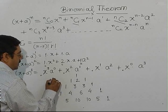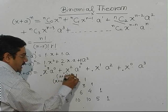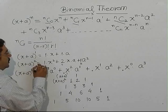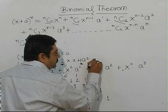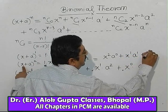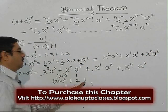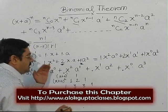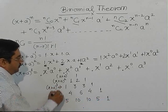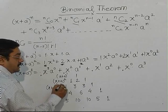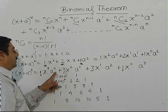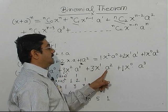So (x + a)^0 gives 1; (x + a)^1 gives 1, 1; (x + a)^2 has coefficients 1, 2, 1 — arrange highest power of x, lowest power of a, decrease x's power and increase a's power, putting coefficients 1, 2, 1. Similarly for (x + a)^3, arrange the powers, and the coefficients are 1, 3, 3, 1. The expansion is x³ + 3x²a + 3xa² + a³.